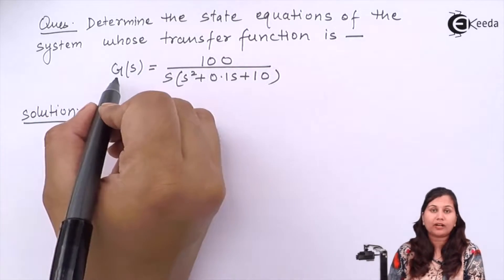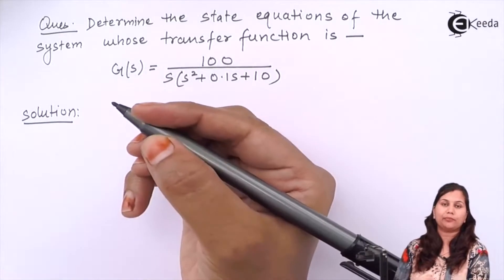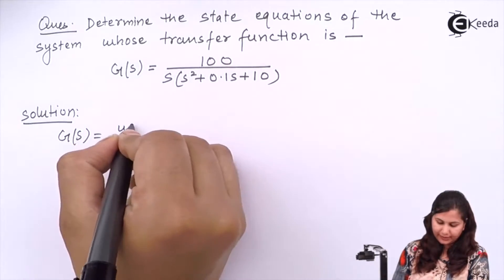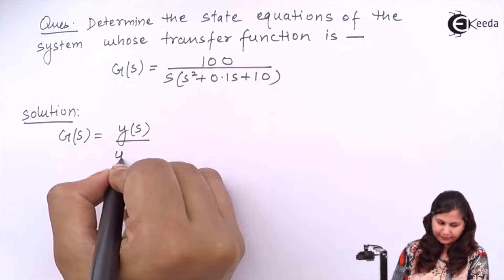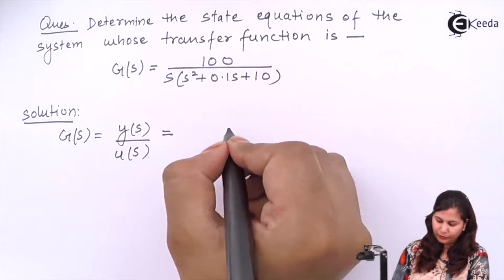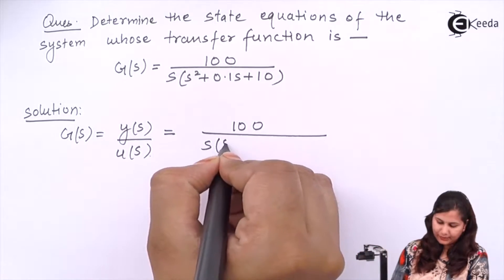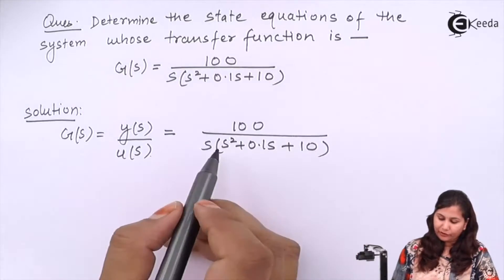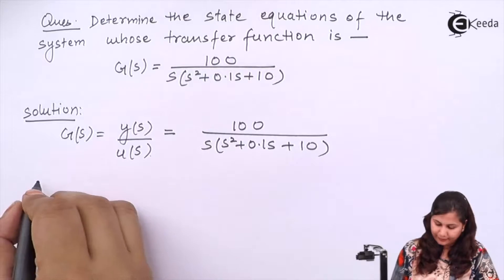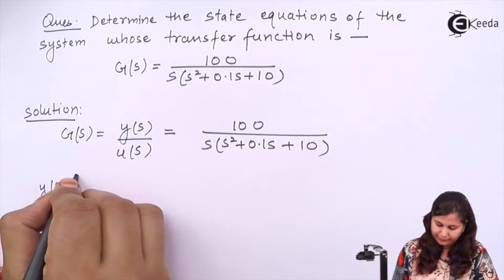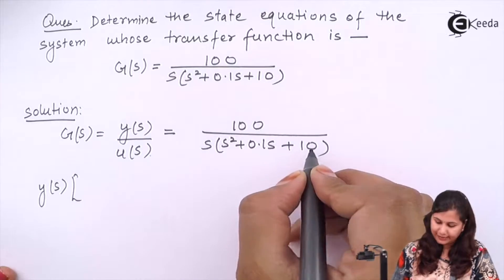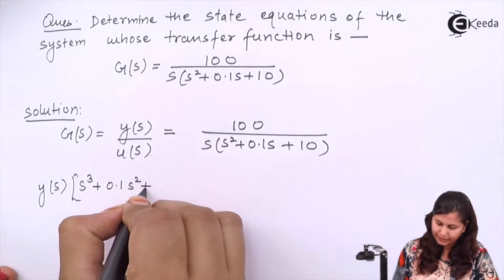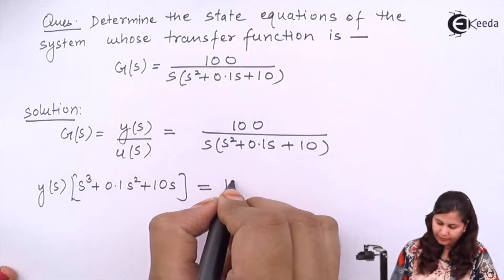We know that the transfer function is the ratio of the Laplace transform of the output and the input. So we can write G(s) = Y(s)/U(s) = 100 / (s(s² + 0.1s + 10)). If we cross multiply and multiply s inside, we get s³ + 0.1s² + 10s = 100·U(s).